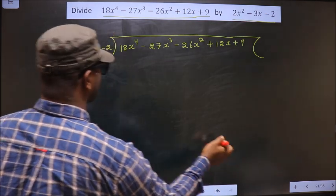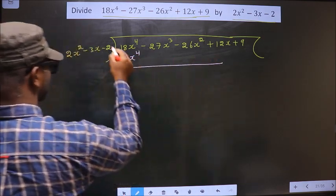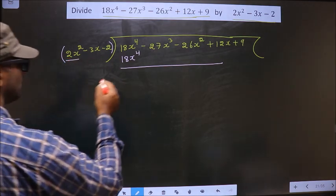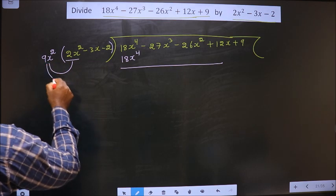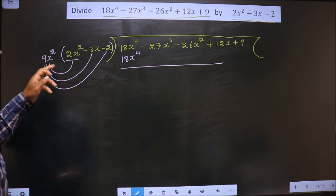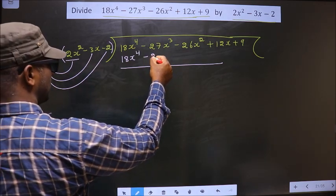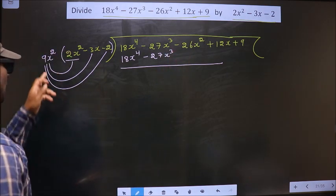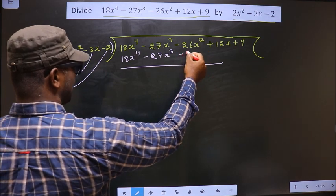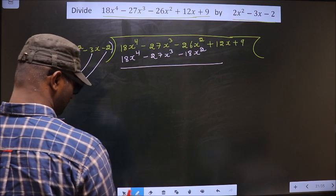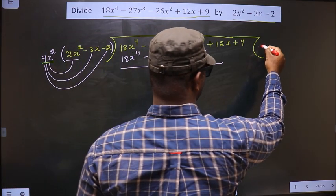Here we have 18x⁴, and below this we should also get 18x⁴. Since the divisor starts with 2x², we multiply by 9x² to get 18x⁴. We must also multiply 9x² by the other terms: 9x² times minus 3x is minus 27x³, written below the x³ term; and 9x² times minus 2 is minus 18x². This 9x² is the first term of our quotient.